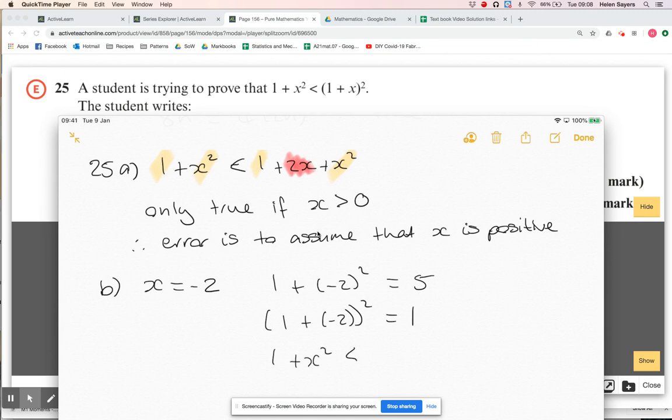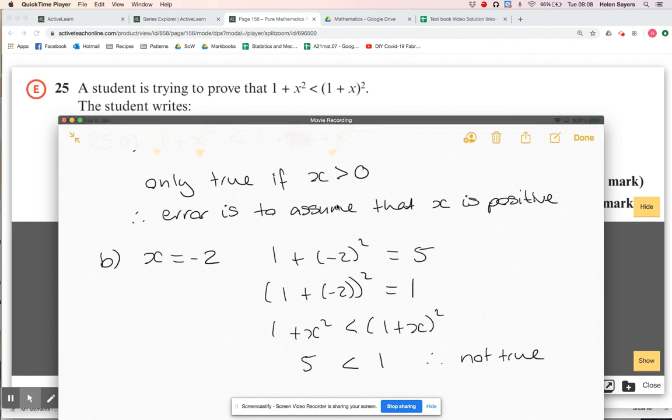So 1 + x² < (1 + x)². This is what we're trying to disprove with a counterexample. We use x equals minus two: the left hand side is five, the right hand side is one, which is not true.